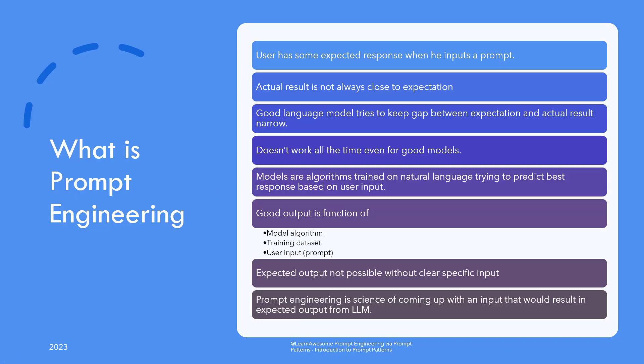Now, when we interact with the model and provide a prompt, we have a rough sketch of the type of output we expect to be generated. A good language model would generate a response closer to the one you are expecting. But this is tricky since there is no magic involved — it's not a mind reader. It's a software algorithm trained on natural language using vast datasets. It, at best, tries to predict the best response given the input from you. So we can say that the output it generates is as much a function of user input as it is of the training data it was trained on.